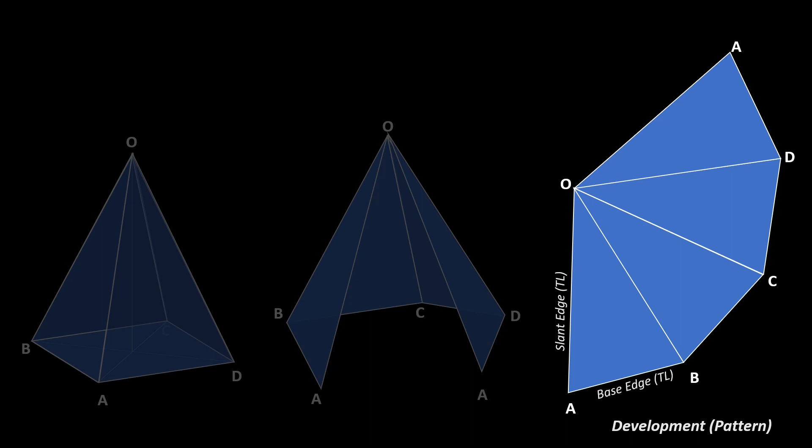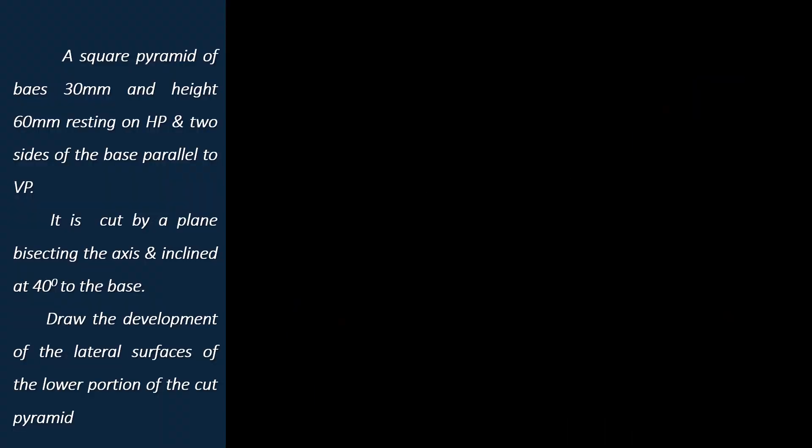Let's look at the procedure to draw the pattern of the pyramid with the help of a problem. A square pyramid of base edge 30mm and height 60mm resting on HP and two sides of the base parallel to VP. It is cut by a plane bisecting the axis and inclined at 40 degrees to the base. Draw the development of the lateral surfaces of the lower portion of the cut pyramid.